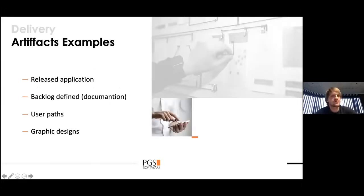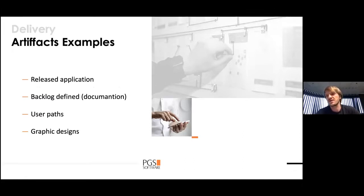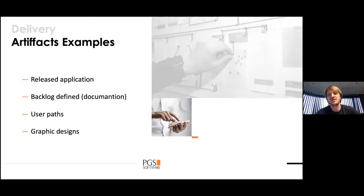What you get from delivery is a released application and a defined backlog. With BA and UX specialists on board, they can discuss with the product owner how things should work, creating better descriptions of stories — the backlog becomes actual documentation of the project. This is important when getting new team members or handing the project to a new team. You also get user paths: a basic overview of the whole planned scope, and graphic designs that should be stored in a way that they can be reused.